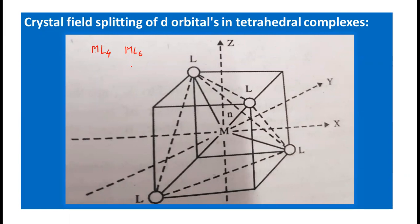Now let us see how the d orbitals are split in tetrahedral complexes where 4 ligands are bonded to the metal. The tetrahedral geometry is represented within a cube, where the metal is at the center and the 4 ligands are at the 4 alternate corners of the cube — that is, at the 4 corners of the tetrahedron.